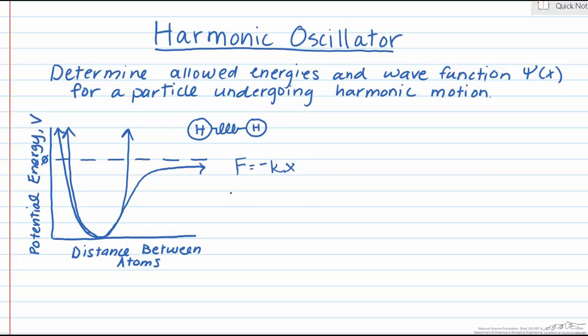In this case, k is our spring constant and x is the distance from the equilibrium position. The potential term will be one-half kx squared.